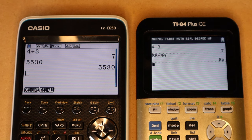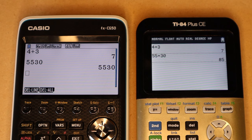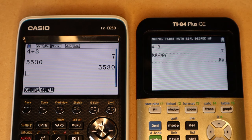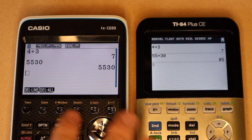So for example, the ACT does not allow CAS calculators. And because of that, you wouldn't be able to use something like the TI-Inspire CX CAS, but you would be able to use either of these.